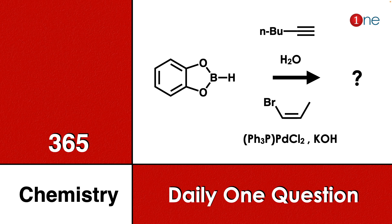Welcome to One Chemistry, this is the 365 Chemistry series — daily one question for you. Here you have borane and a bulky group, ethyl. Then you are using water, an alkenyl bromide, further using a palladium catalyst and base. You have to guess what will be the final product.